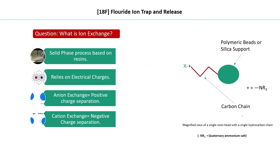Ion exchange is a solid-phase process based on electrical charges to accomplish separation. The trap and release process is completely based on ion exchange. A magnified view of a single resin bead shows a carbon chain bound to the bead, where the beads are made of organic polymer or silica support. At the end of this chain, there is a charge.